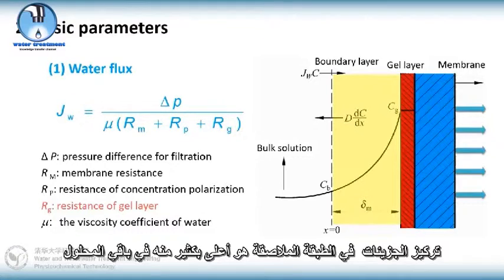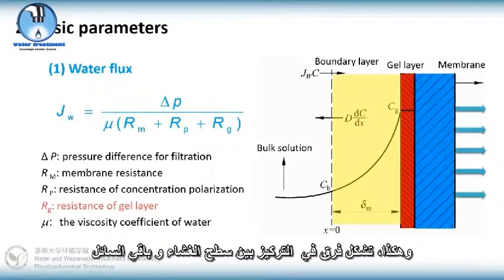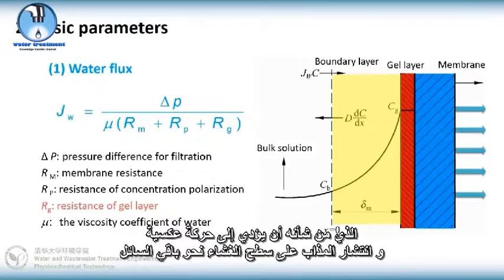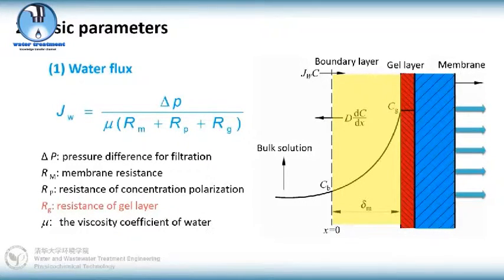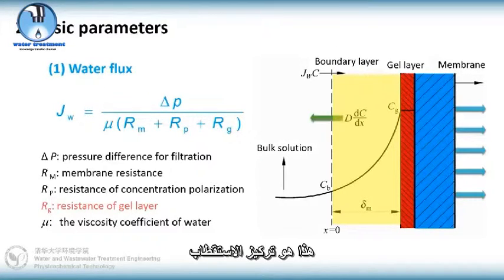The solute concentration in the boundary layer is much higher than that in the bulk solution. Thus, forming a concentration difference between membrane surface and the bulk solution, which would lead to the inverse diffusion of solute on membrane surface towards the bulk solution. This is concentration-polarization.